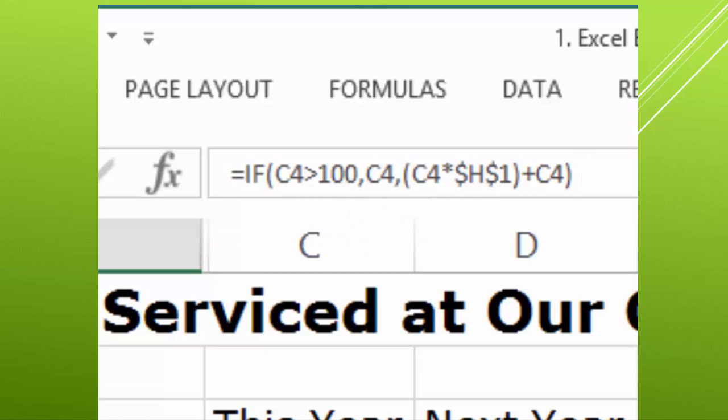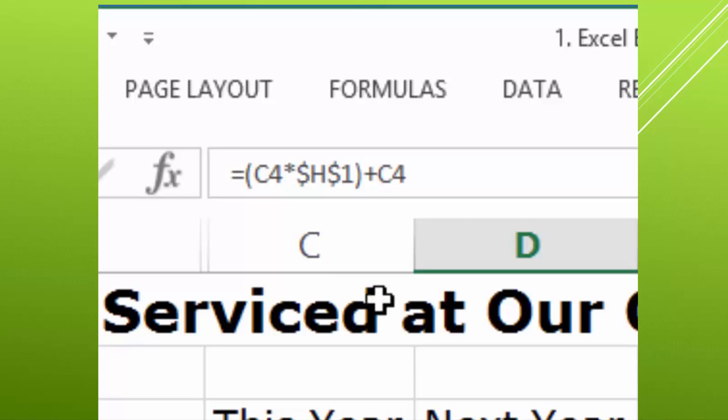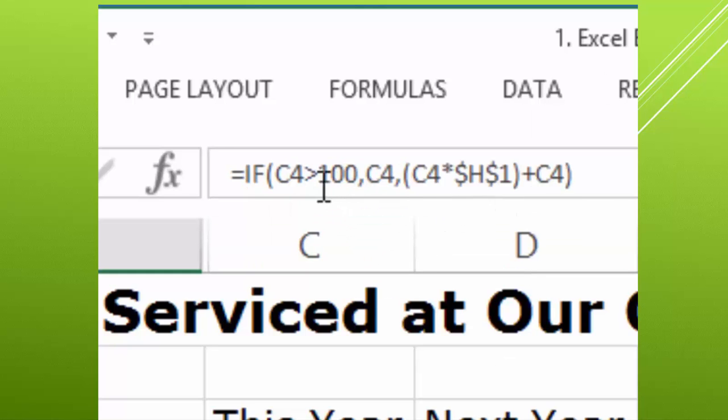Okay, and so this is saying, if the provider sees more than 100 patients, their workload won't increase. And you're saying, oh my goodness, this looks so complicated, but it's really not so complicated. If we come back to our formula that we wrote just a moment ago, it said take the value times the absolute value and add it back to its original value.